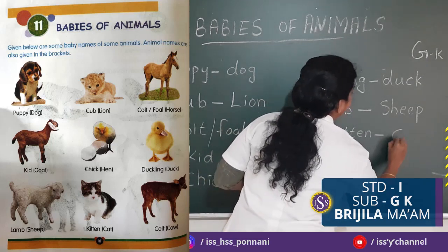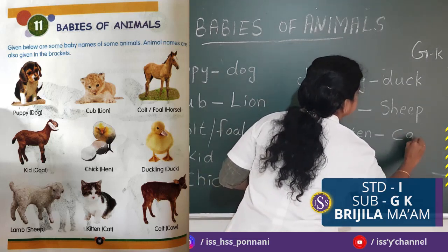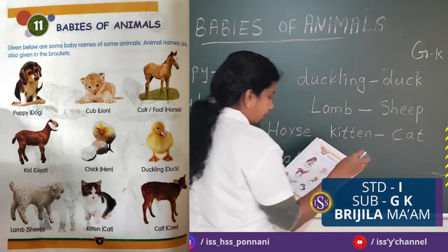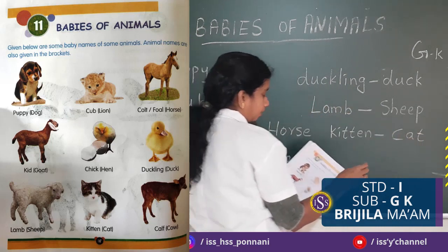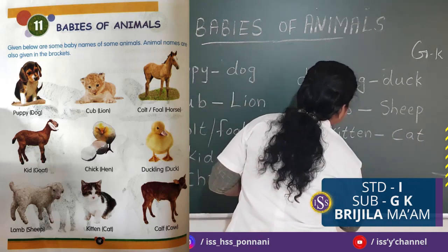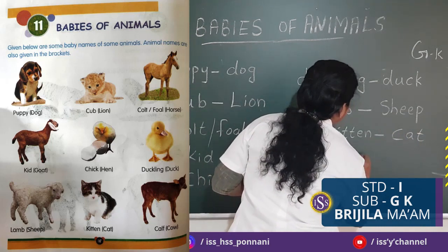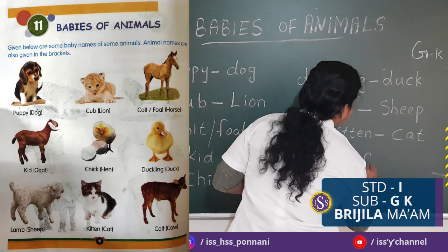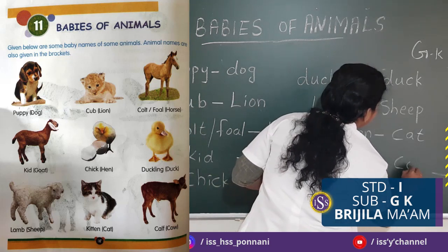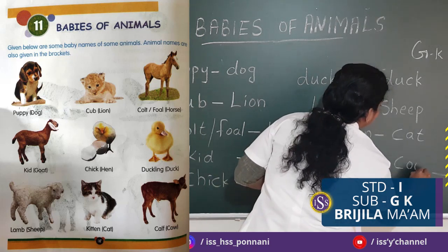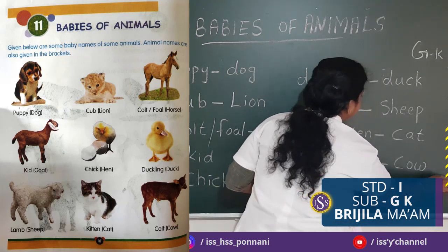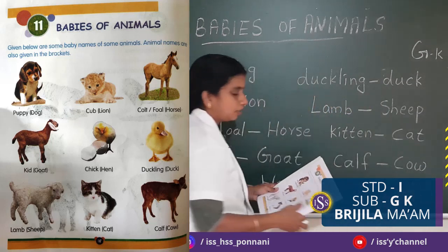Next animal is Cat. The cat's baby is called Kitten. Last one — Calf. The animal is Cow. The cow's baby is called Calf.